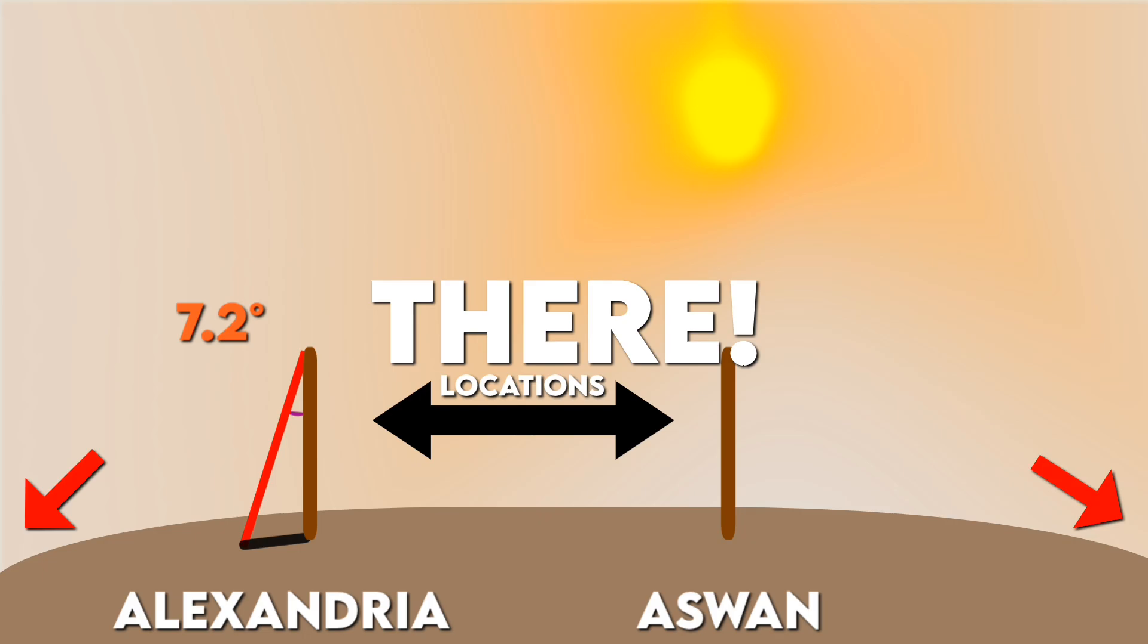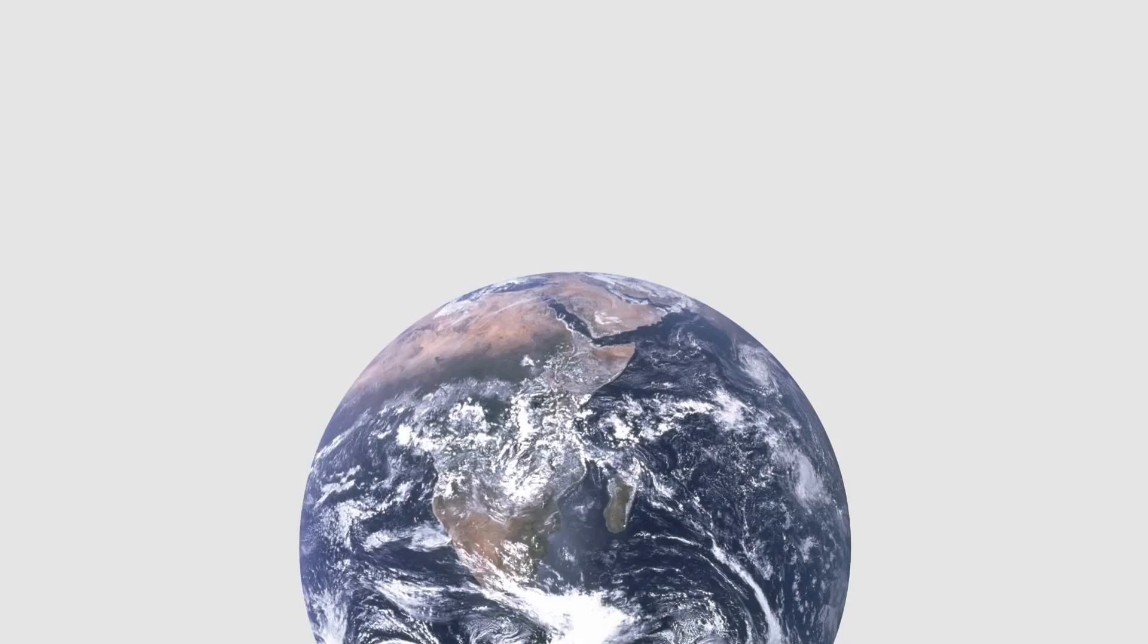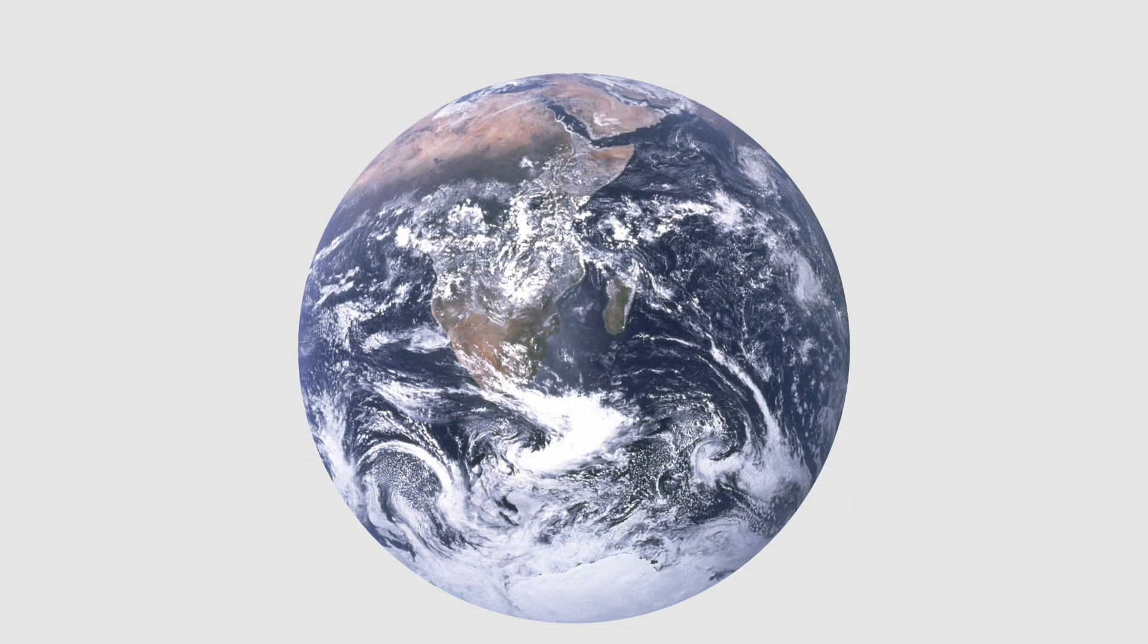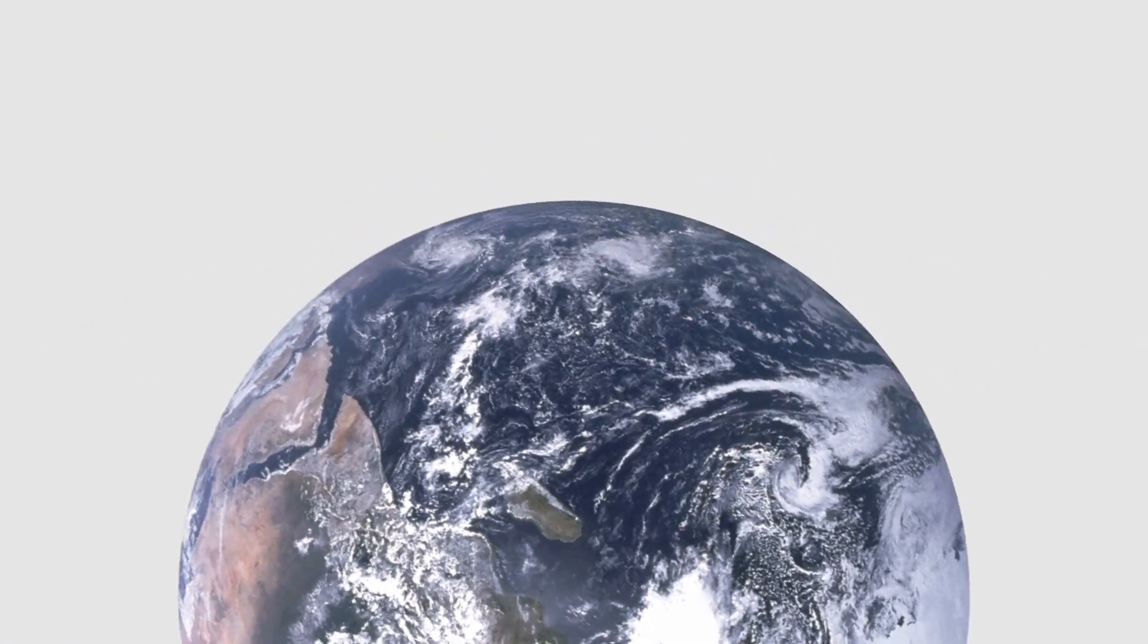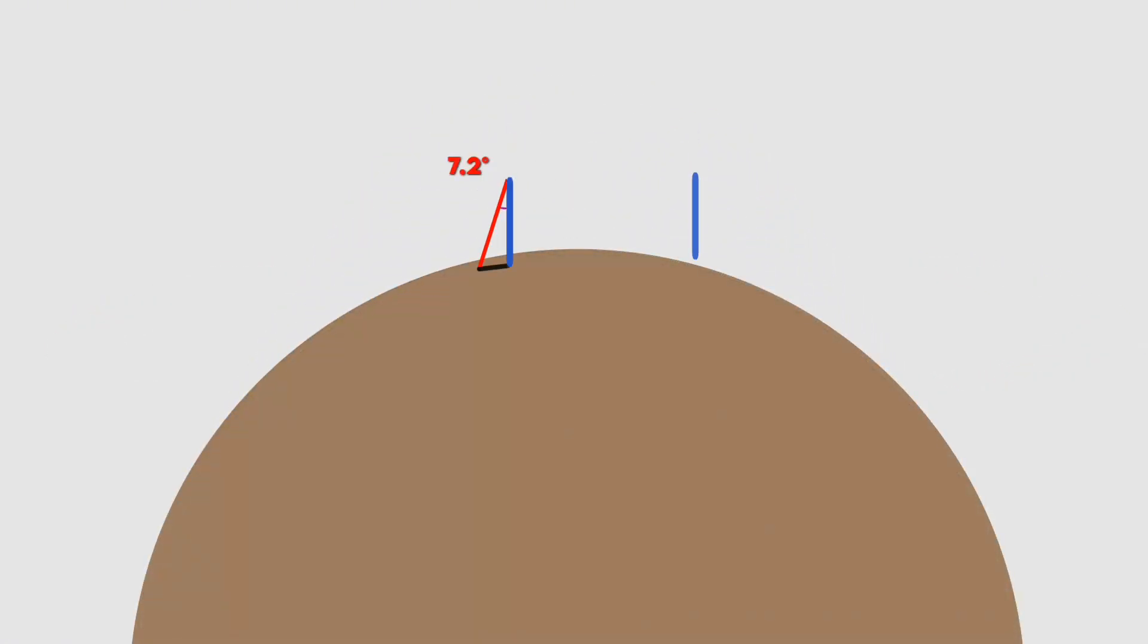But Eratosthenes didn't stop there. Having accepted the Earth's spherical shape, he decided to calculate its circumference and diameter. He deduced that since the shadow angle between Aswan and Alexandria was 7.2 degrees, if we were to draw a line from Aswan to the Earth's center and another from Alexandria to the Earth's center, the angle between the two lines would also be 7.2 degrees.